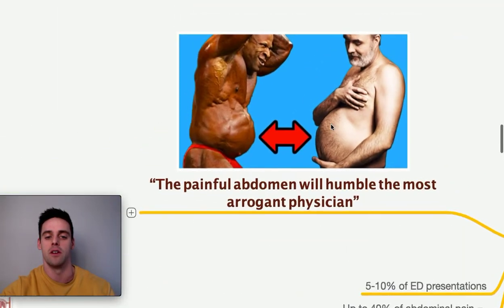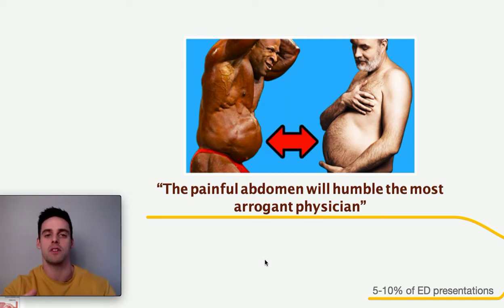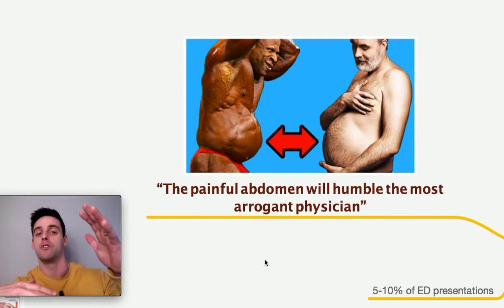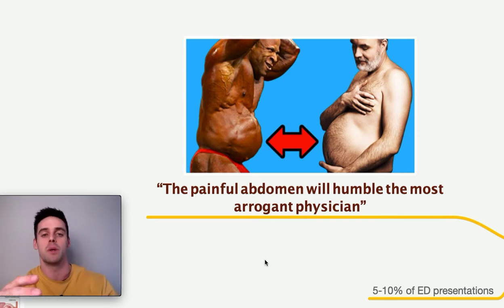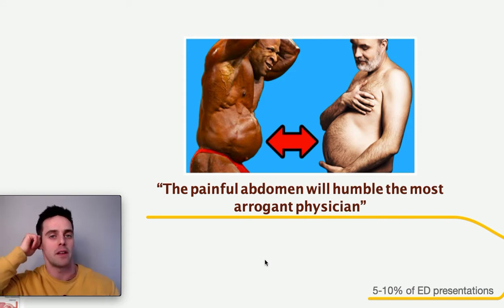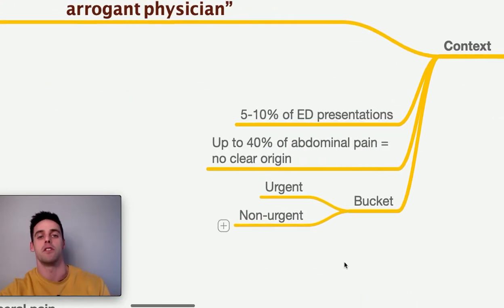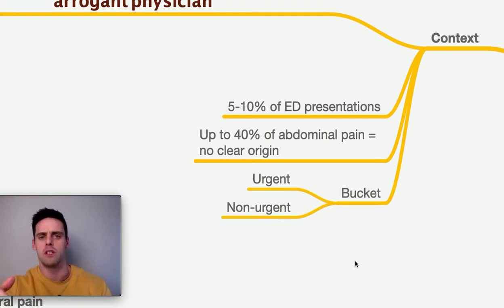First, a bit about context. It has been said that the painful abdomen will humble the most arrogant physician. Abdominal pain is a bit of a black box — many different systems within the abdomen communicate upwards with the thorax and downwards with the pelvis, with a lot of cross talk in between. Pain pathways can be notoriously diffuse and difficult to localise, and what might seem to be benign abdominal pain can sometimes turn out to be something really nasty. 5 to 10% of emergency department presentations are for abdominal pain, and up to 40% are ultimately diagnosed as abdominal pain of no clear origin.